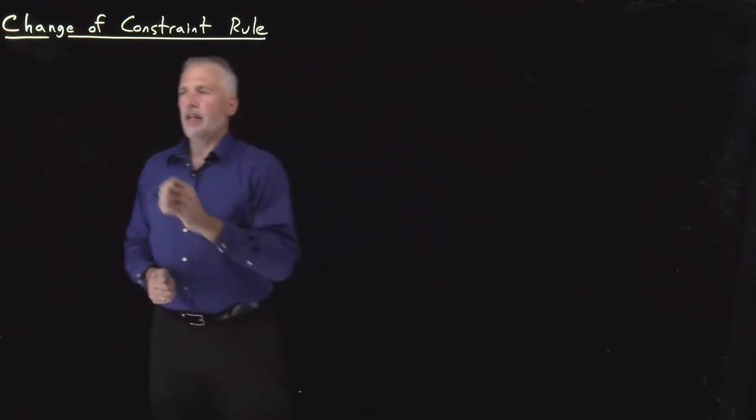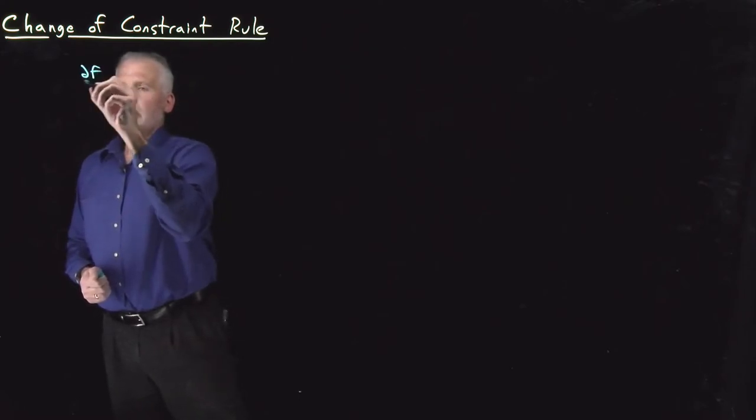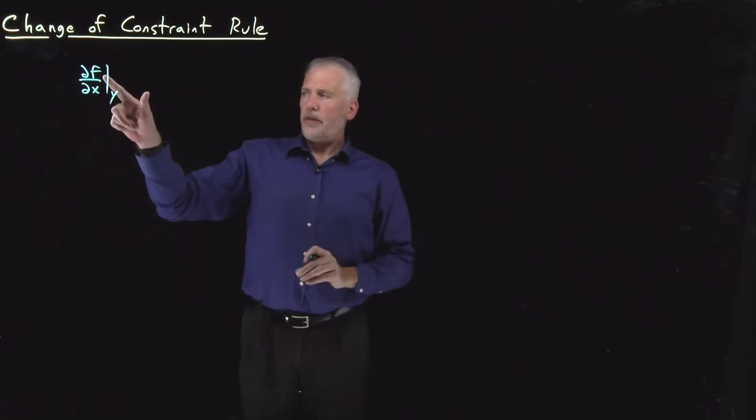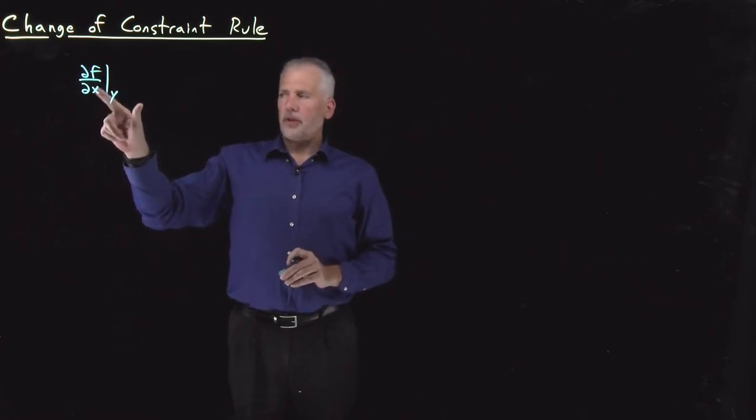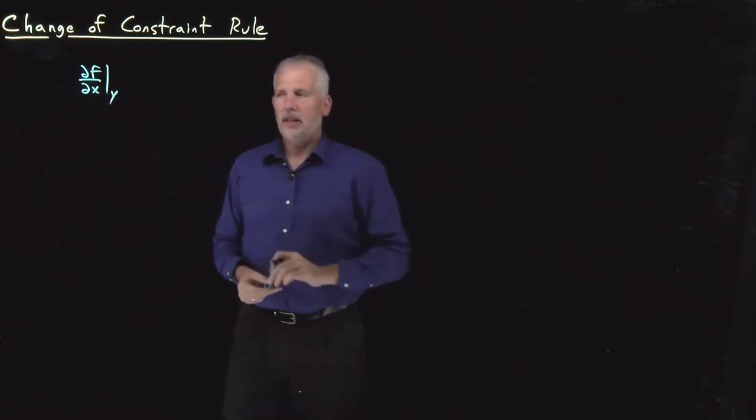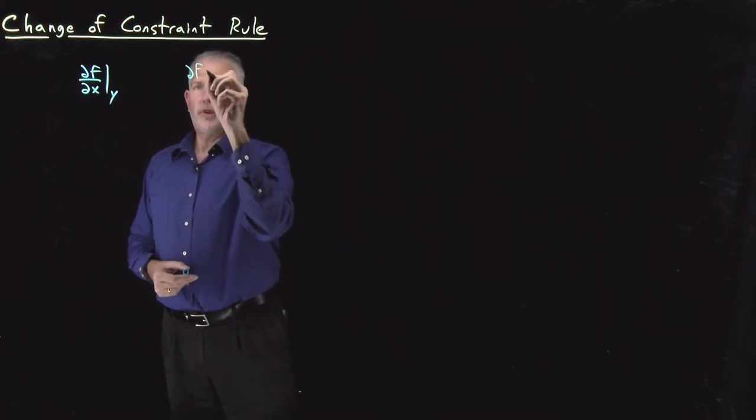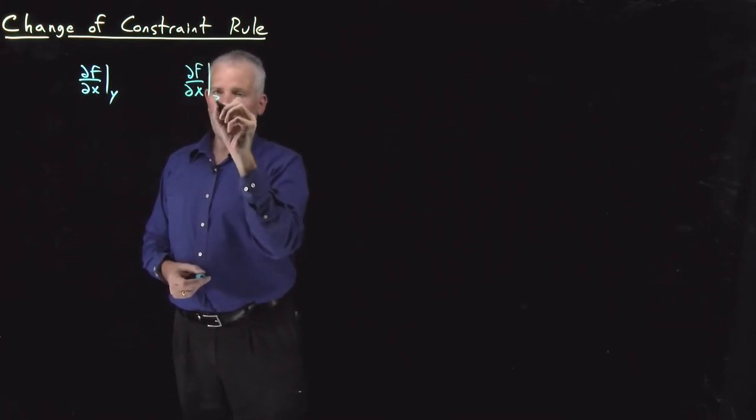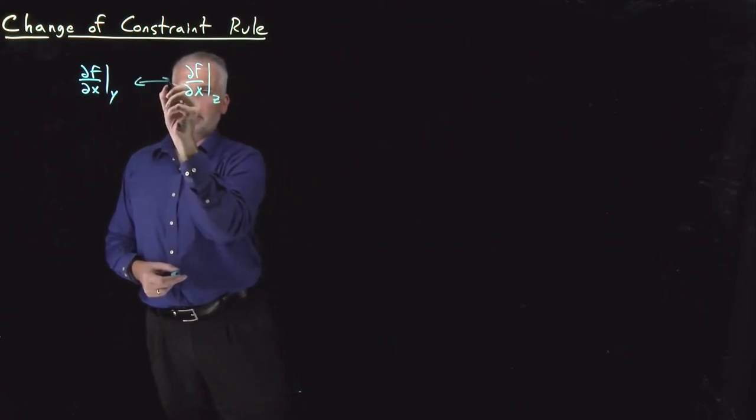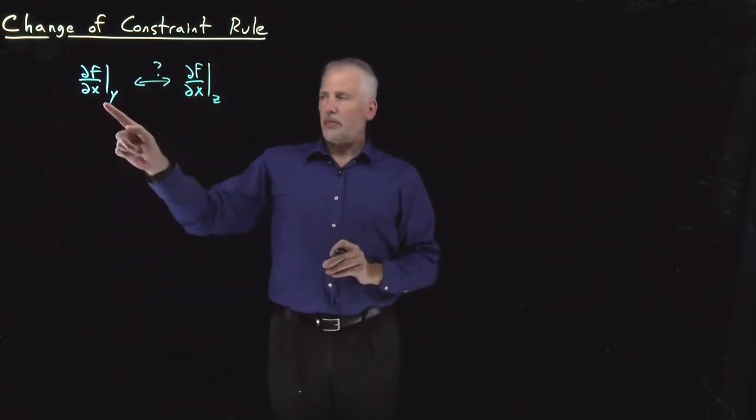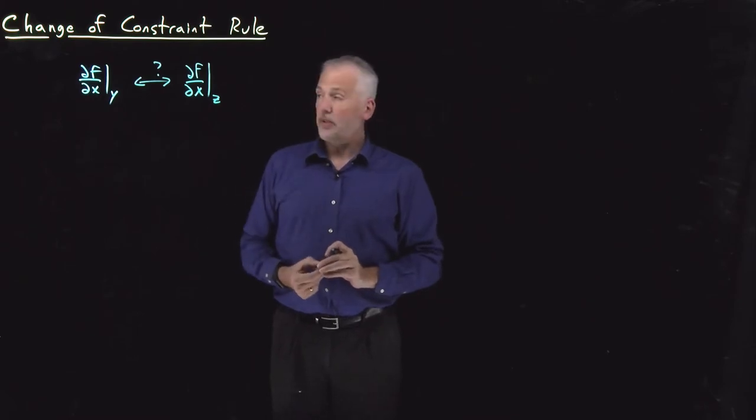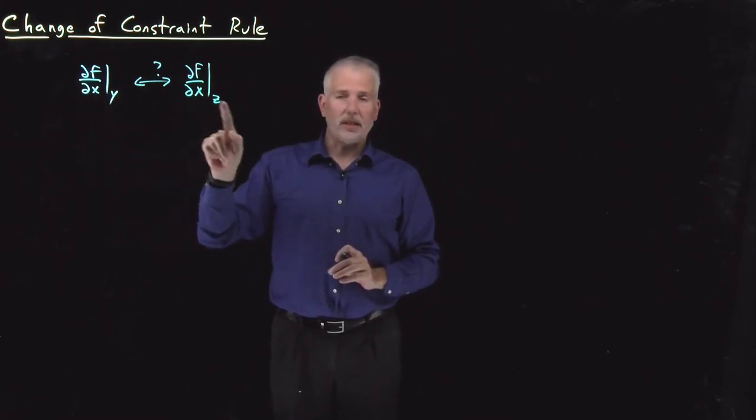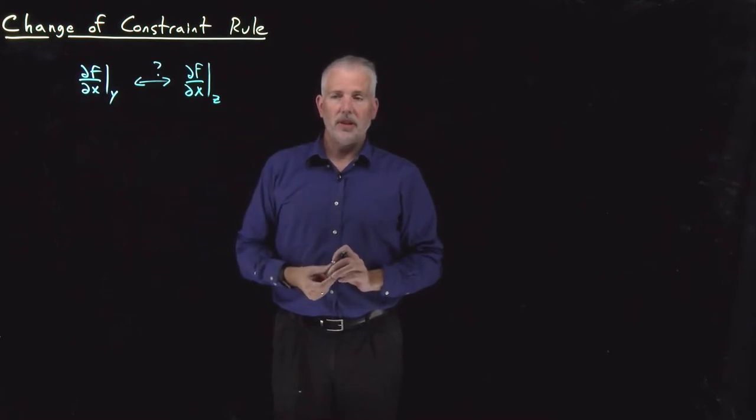It often happens that we may know the value of some derivative of a function with respect to x at constant y, but perhaps what we're really interested in is the derivative of that same function with respect to the same variable while holding something else constant. So we often need to be able to convert back and forth between those two, how to convert between df/dx at constant y and df/dx at some different constant variable, z.